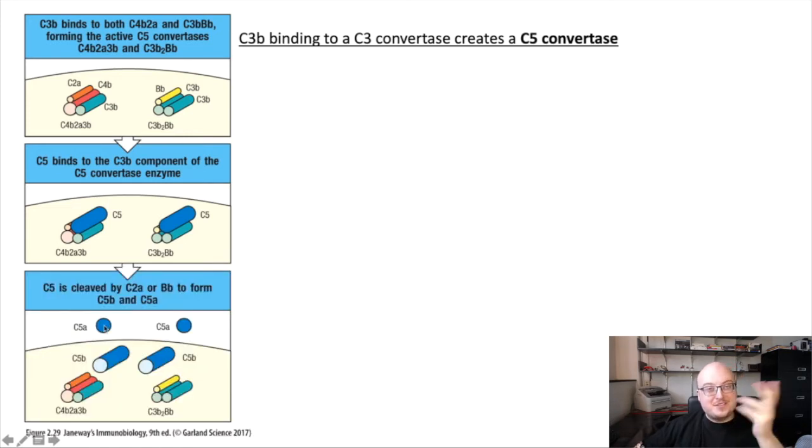C5A, the smaller fragment, is going to float away. And C5B is going to stick around and bind to downstream substrates. So let's talk about what happens, particularly with C5B.